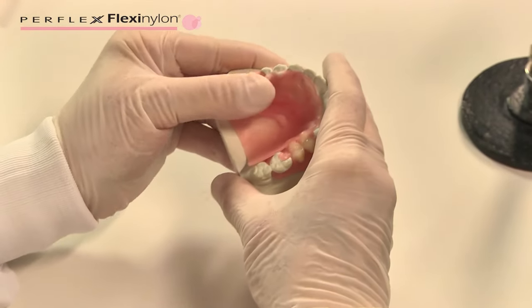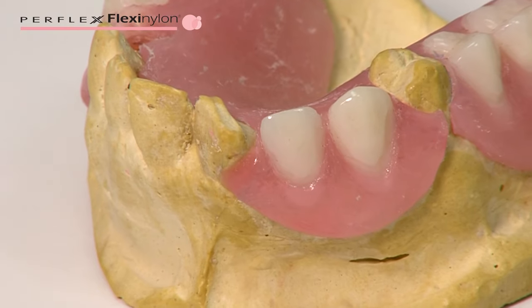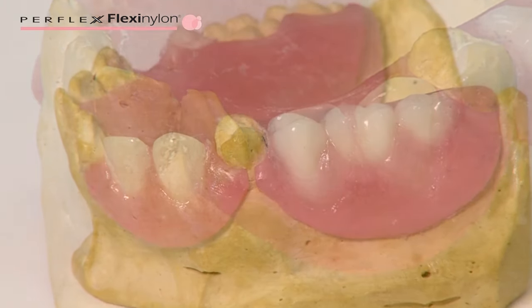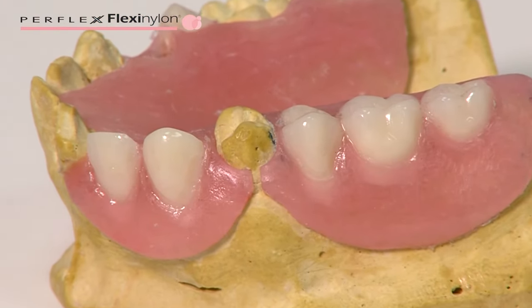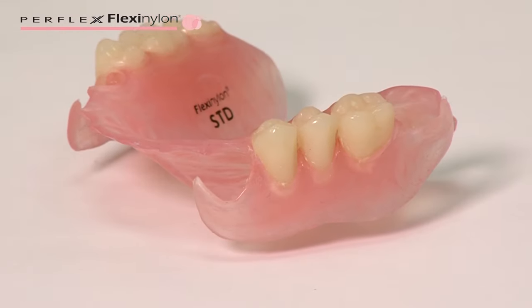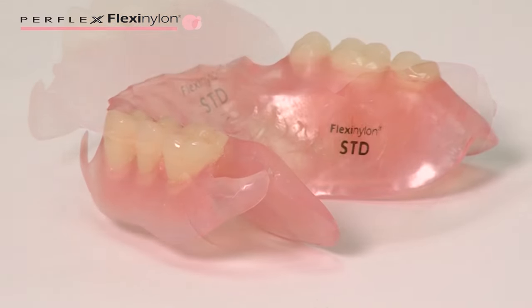Types of clasps for flexi-nylon: Spur clasp. Divided clasp in two parts, from mesial and distal, spur type. Conventional clasps. Double clasp.